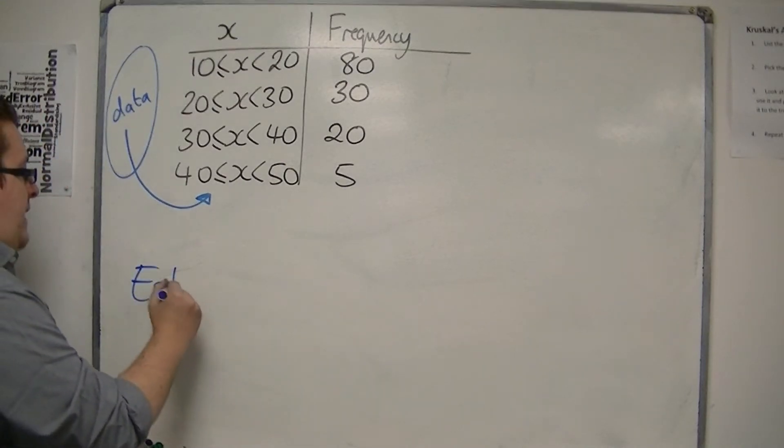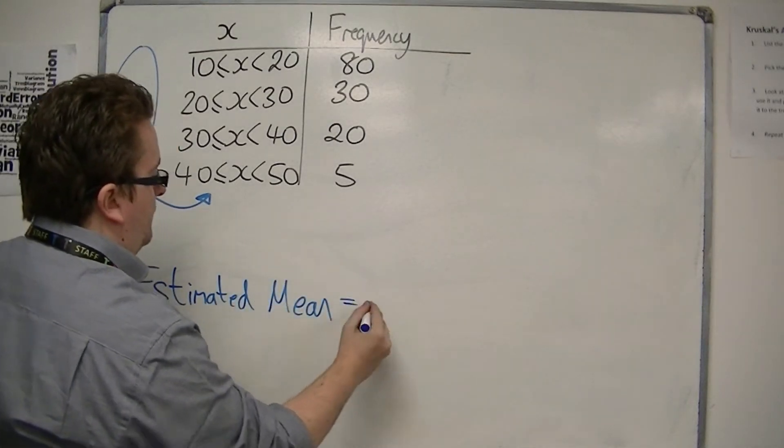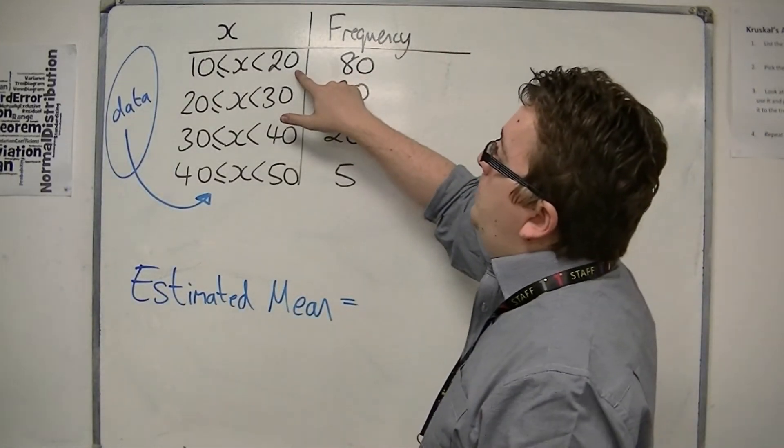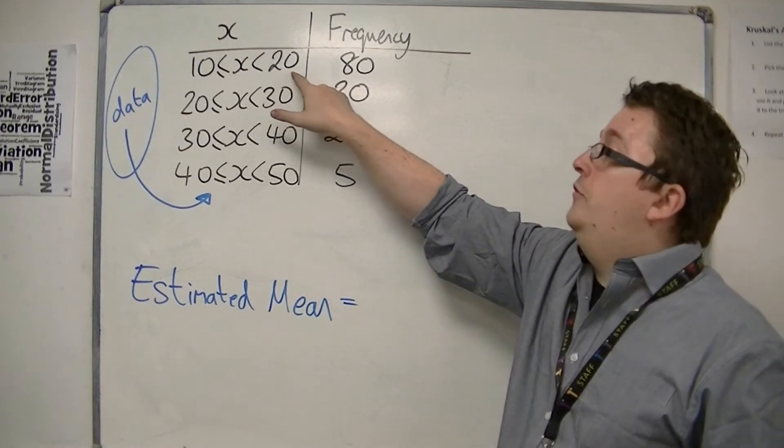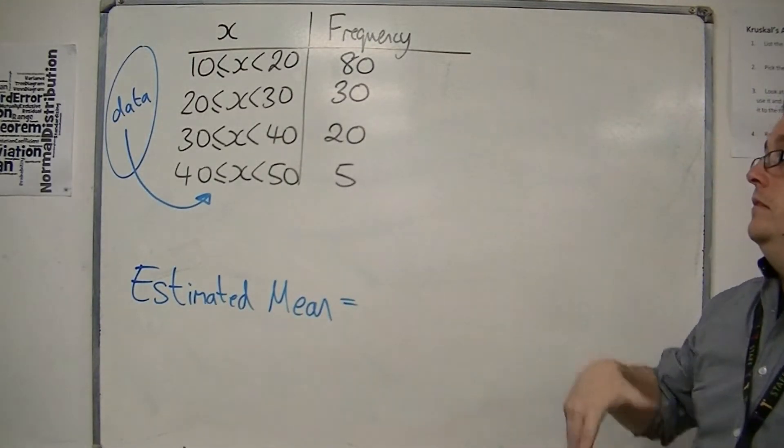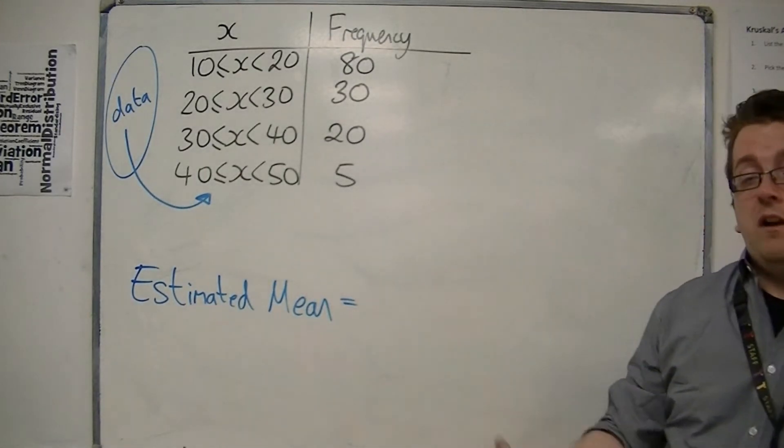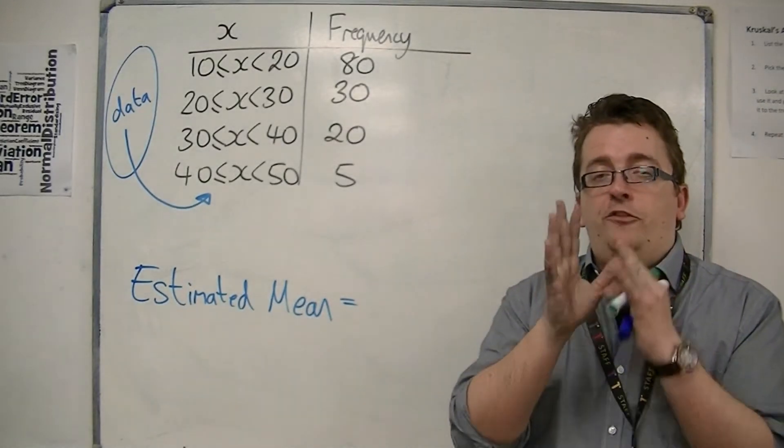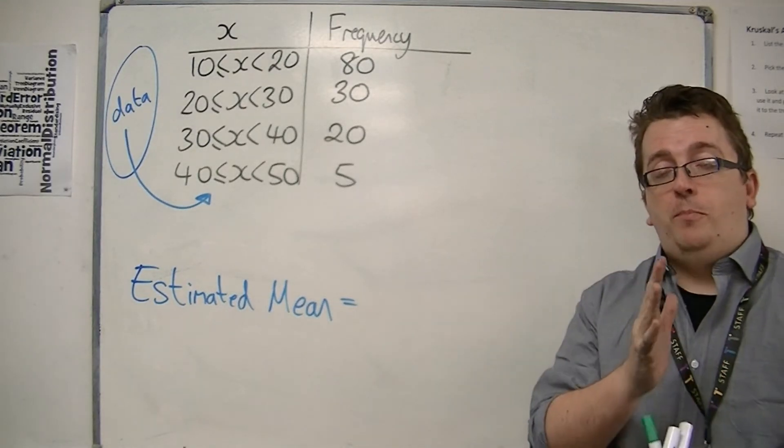So what we can calculate is an estimated mean, not the actual mean, because we just don't know what the original numbers were. If all of these numbers had been between 19 and 19.5, for example, so they'd all been in the upper part of the group, then that would obviously give me a slightly different mean, but we can't assume that. And what we are going to use is an estimate for the group number by taking the midpoint of each group.